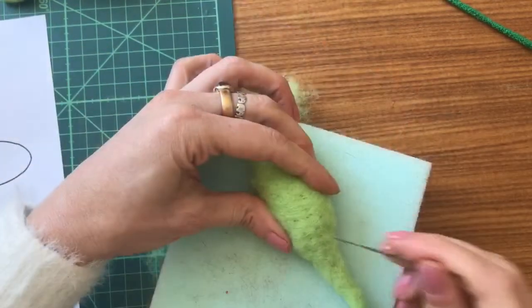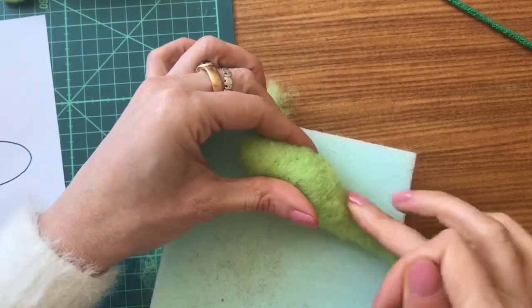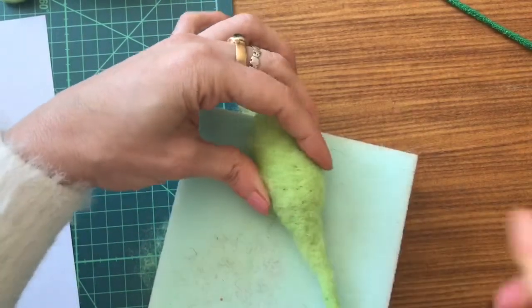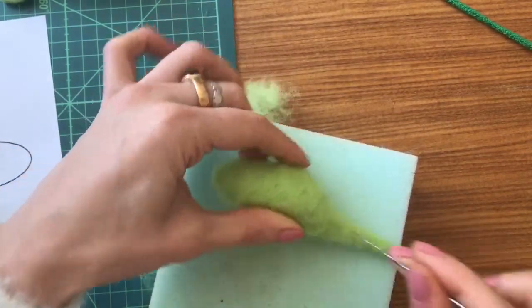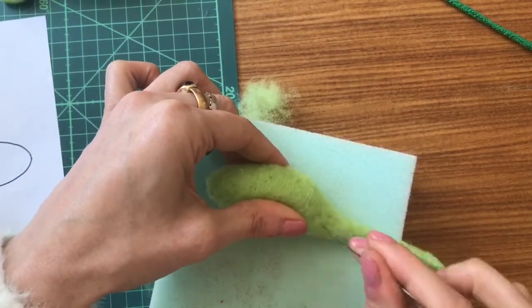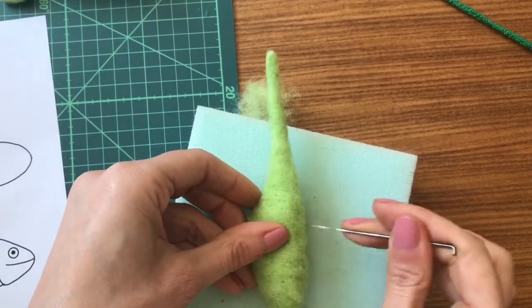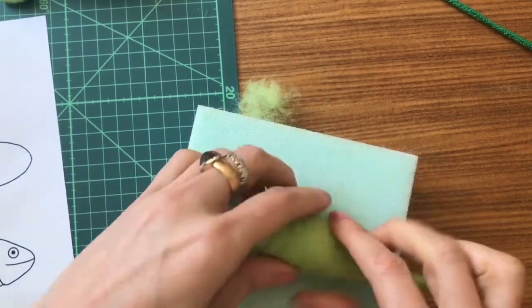From above, we are creating the slope here. At the sides, getting thinner as well going onto the tail. Keep the base of the body flat. Needle felt that more flat.